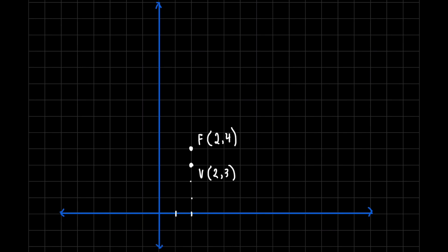Next, the endpoints of our latus rectum. For LR₁ at (4, 4), we count to position 4 on x and 4 on y. For LR₂ at (0, 4), we go to x equals 0 and y equals 4. These are our two latus rectum endpoints.